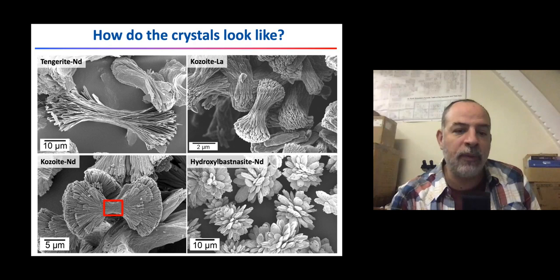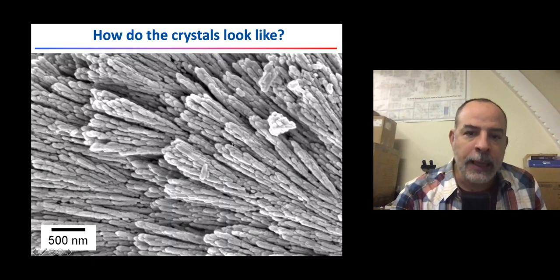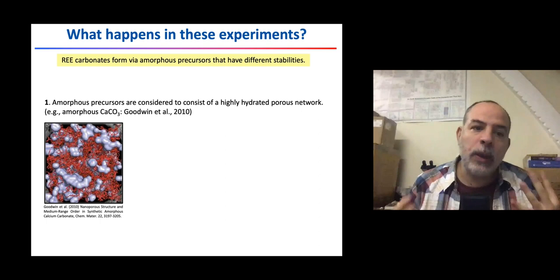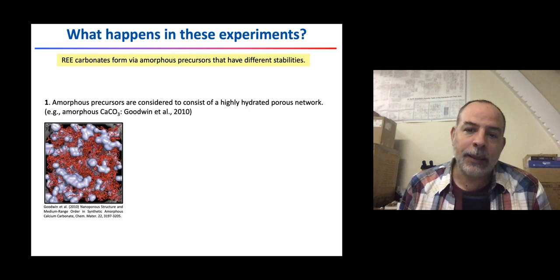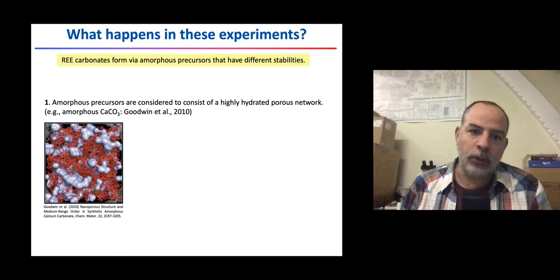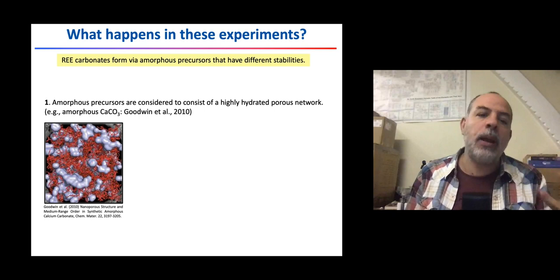We have seen that amorphous phases form and have different stabilities. The nature of this amorphous phase is considered to be similar to amorphous calcium carbonate and amorphous magnesium carbonate — a porous network that contains water. Amorphous calcium carbonate precursors dissolve during breakdown, and the transformation from amorphous to crystalline carbonate involves dehydration processes. Therefore, the dehydration of the amorphous rare earth phase must happen during its breakdown to form crystalline phases.